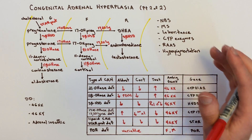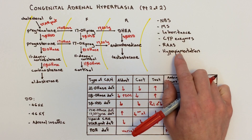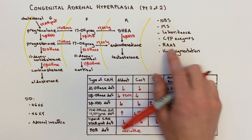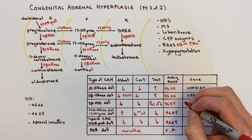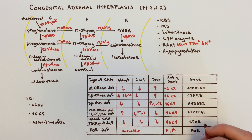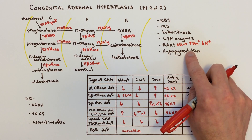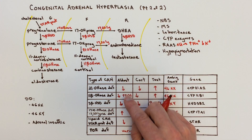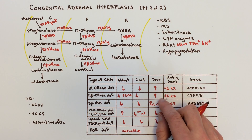The RAAS — renin-angiotensin-aldosterone system — is a way to increase blood pressure, and aldosterone is a key component. Normally aldosterone causes resorption of sodium and excretion of potassium. If you have too much aldosterone, as in 17-alpha-hydroxylase deficiency, you get markedly increased sodium and markedly decreased potassium — hypokalemia and hypertension. When aldosterone is deficient, as in 21-hydroxylase deficiency, you get salt wasting: failure to retain sodium and hyperkalemia because potassium is not being excreted.